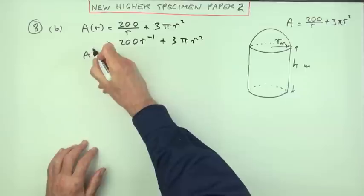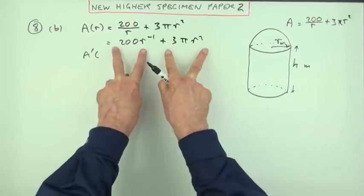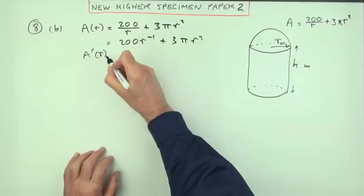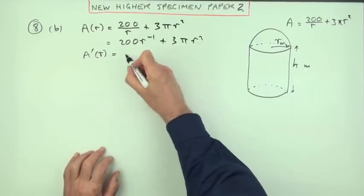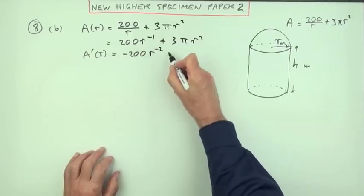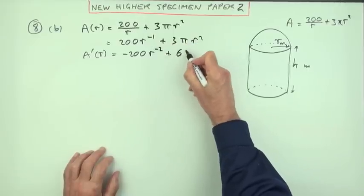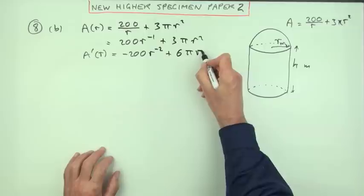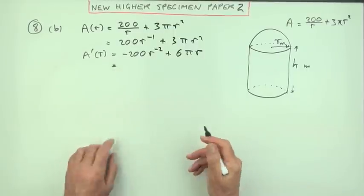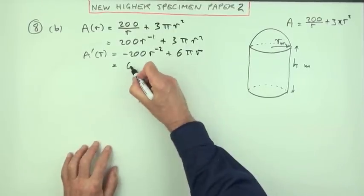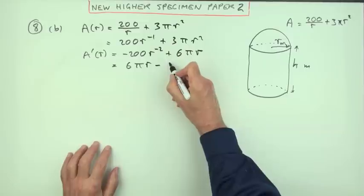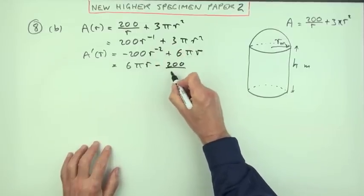Now differentiate it. A dashed of R would be negative 200 R to the negative 2 plus 6 pi R. I'll put it into a manageable form. Swapping the terms over to get the positive one at the front: 6 pi R minus 200 over R squared. There's my derivative.